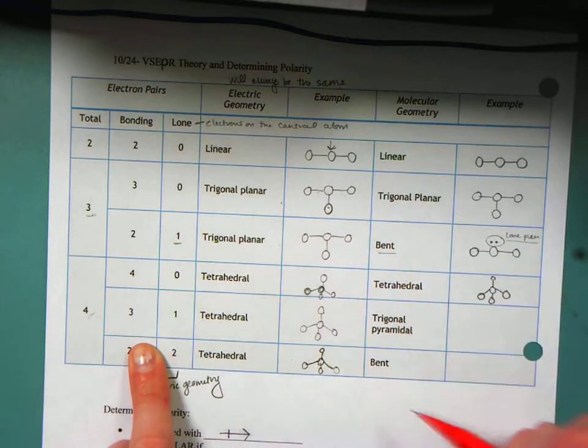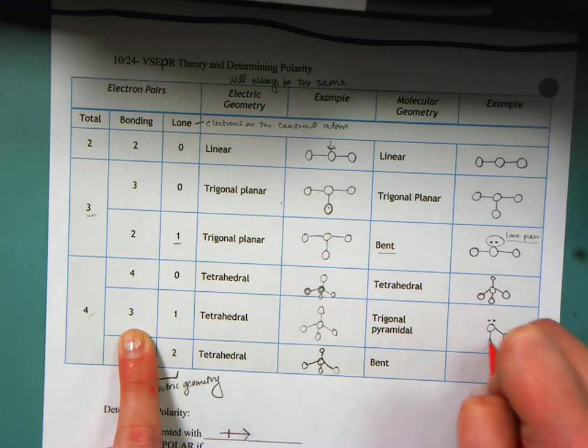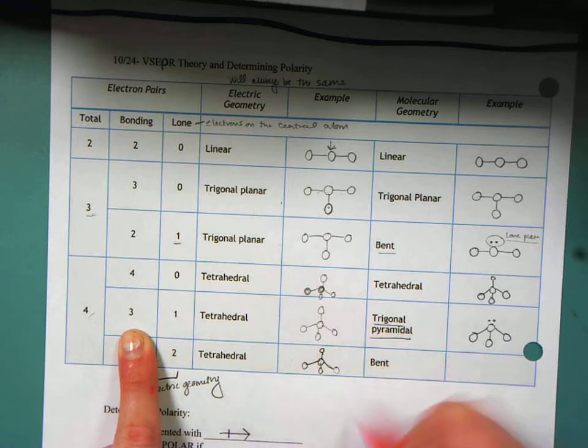But now my molecular geometry is a little bit different because I've got a lone pair. So I draw the lone pair on my central atom, and this is my new tetrahedral. So this is trigonal pyramidal.